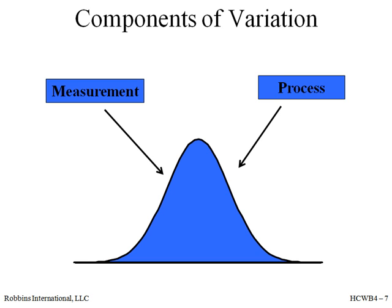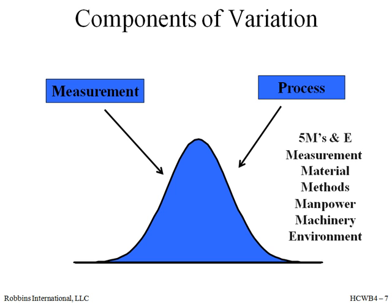There are two basic components of variation: the measurement and the process. The five M's and one E help us identify different process inputs that each cause variation. We break away the measurement system and leave the others under process to better understand our systems. The most important takeaway from this module will be to understand that how we measure our process is critical. The data that we interpret has variation from the process and also by the method we collected it. By analyzing the sources of variation, we will be able to identify the causes and work to reduce them.